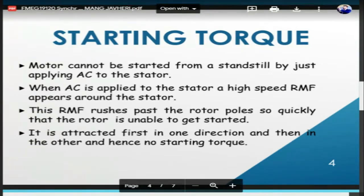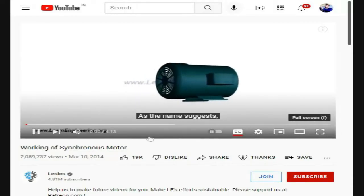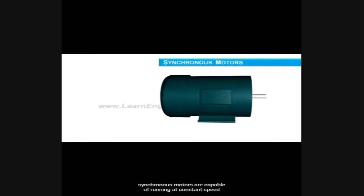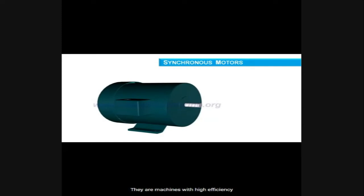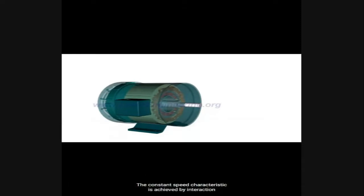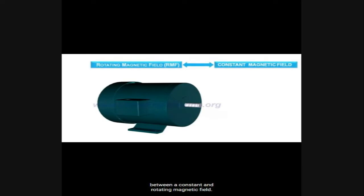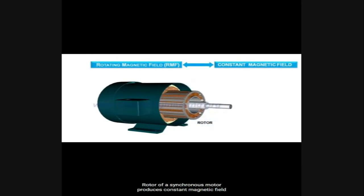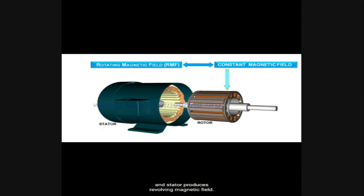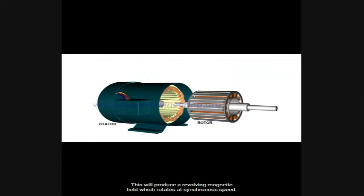As the name suggests, synchronous motors are capable of running at constant speed irrespective of the load acting on them. They are machines with high efficiency and are mainly used in high precision applications. The constant speed characteristic is achieved by interaction between a constant and rotating magnetic field. The stator field coil is excited by a three-phase AC supply, producing a revolving magnetic field that rotates at synchronous speed.